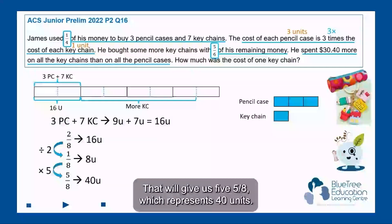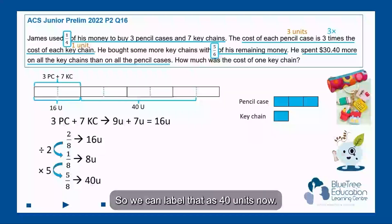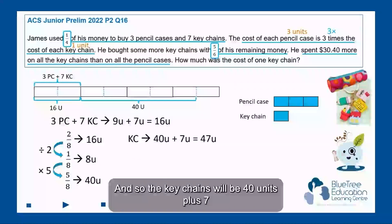So we can label that as 40 units now, and so the keychains will be 40 units plus 7 units to give us a total of 47 units.